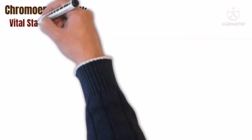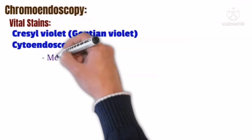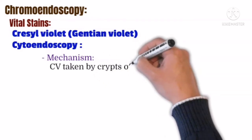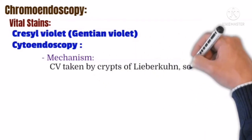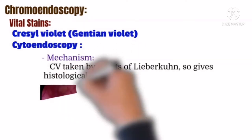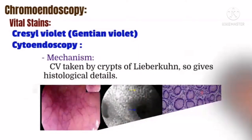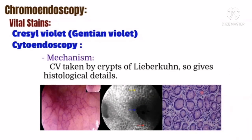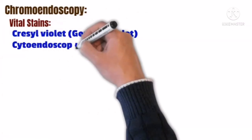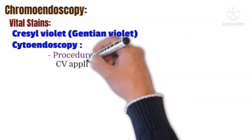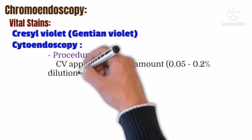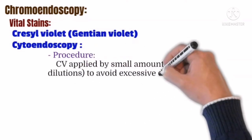The third vital stain is cresyl violet, or gentian violet, which is taken up by the crypts of the large bowel to give histological detail, so it is used for crypt pattern analysis as shown in this image. Cresyl violet is applied in small amounts at 0.05% to 0.2% dilutions to avoid excessive darkening.